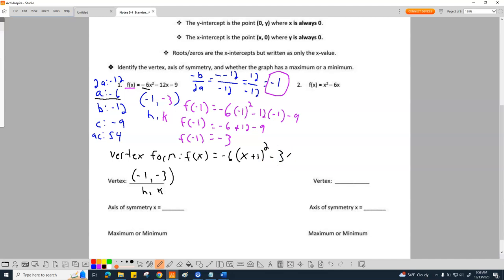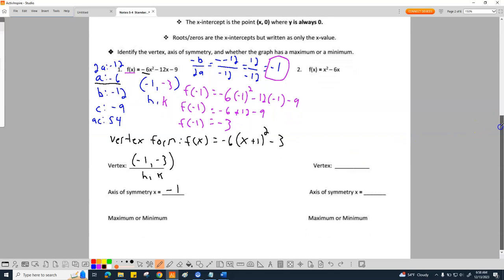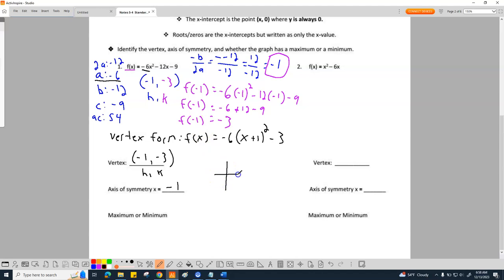The axis of symmetry is going to be X equals H, which in this case is negative 1. And then does it have a maximum or minimum? Does it have a maximum or minimum? So there's multiple ways to figure this out, but what I would do is I would do a quick sketch.